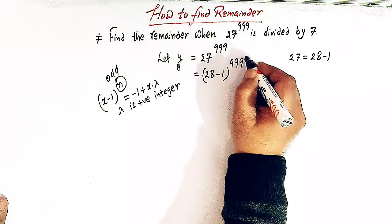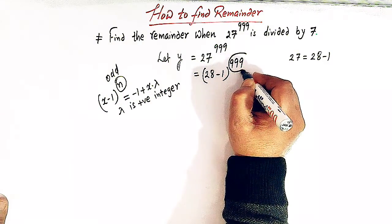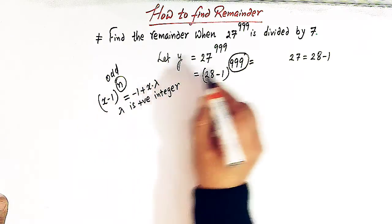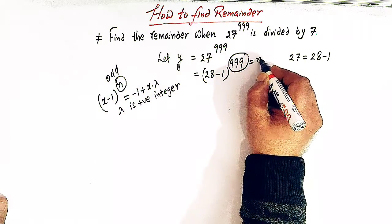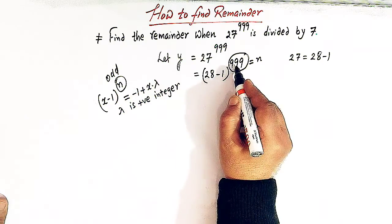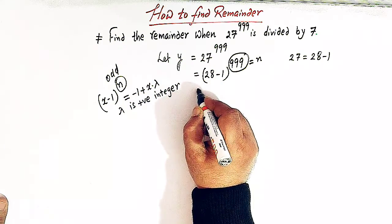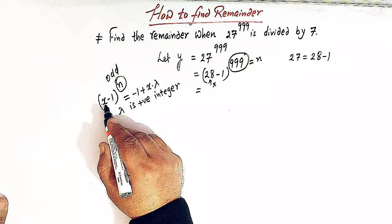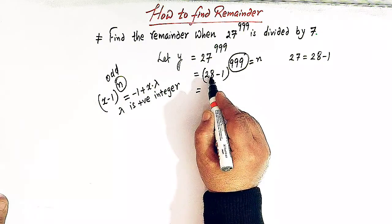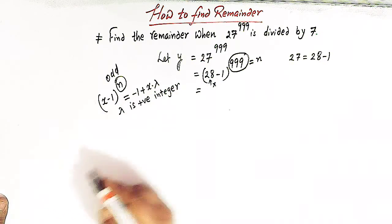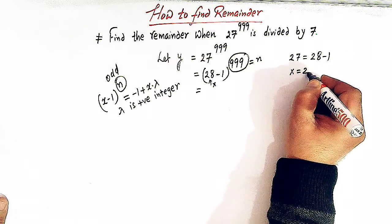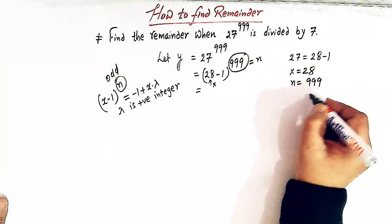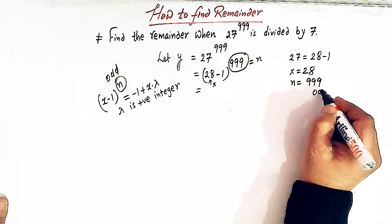Here we can see that 999 is an odd integer, that is the value of n is equal to 999. The value of x is 28 because here we have x minus 1, here we have 28 minus 1. So x is 28 and n is 999 which is odd.